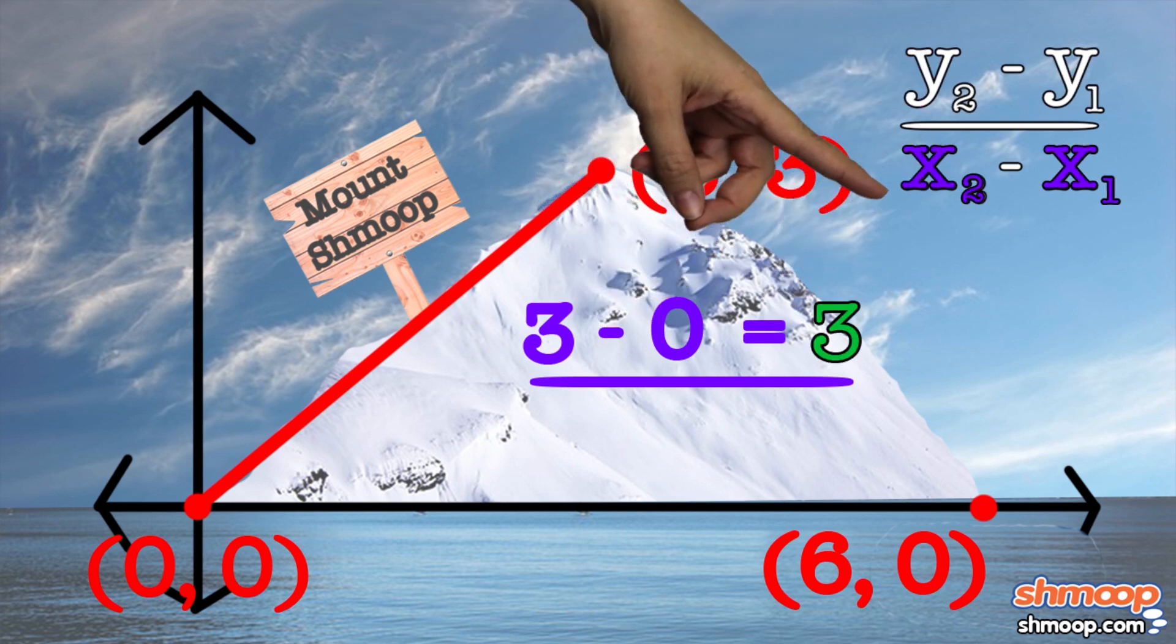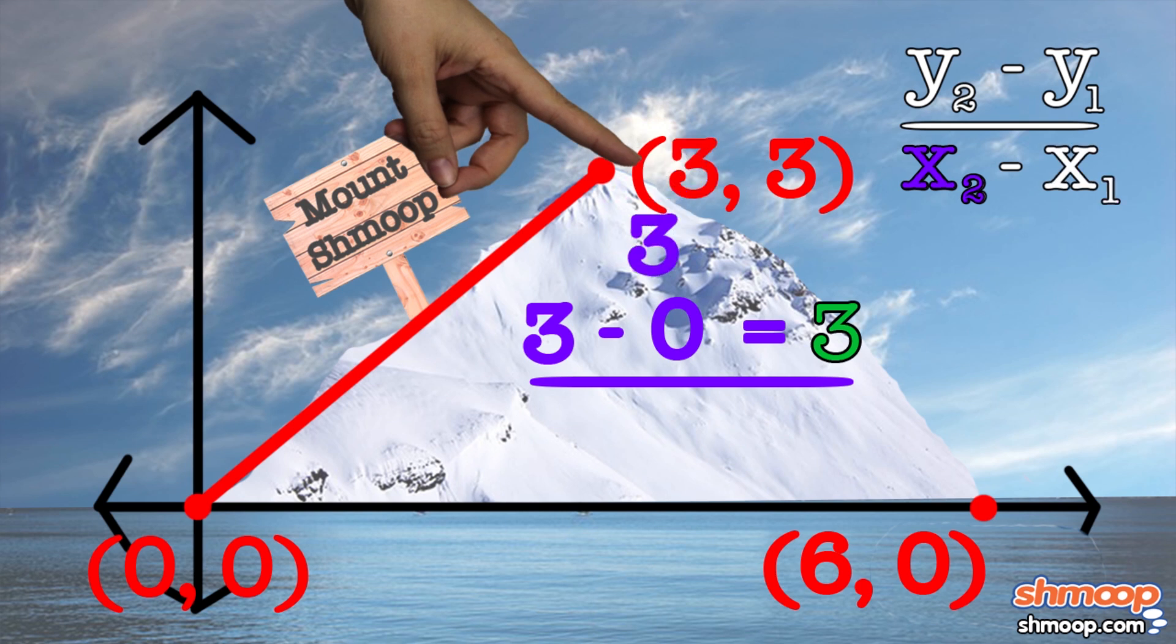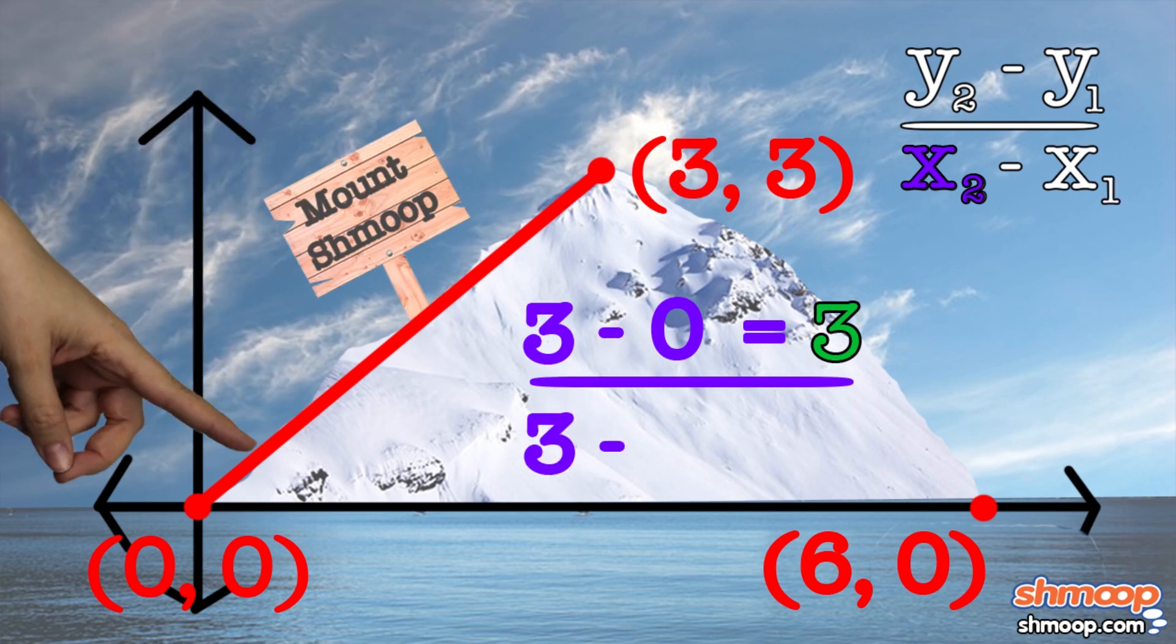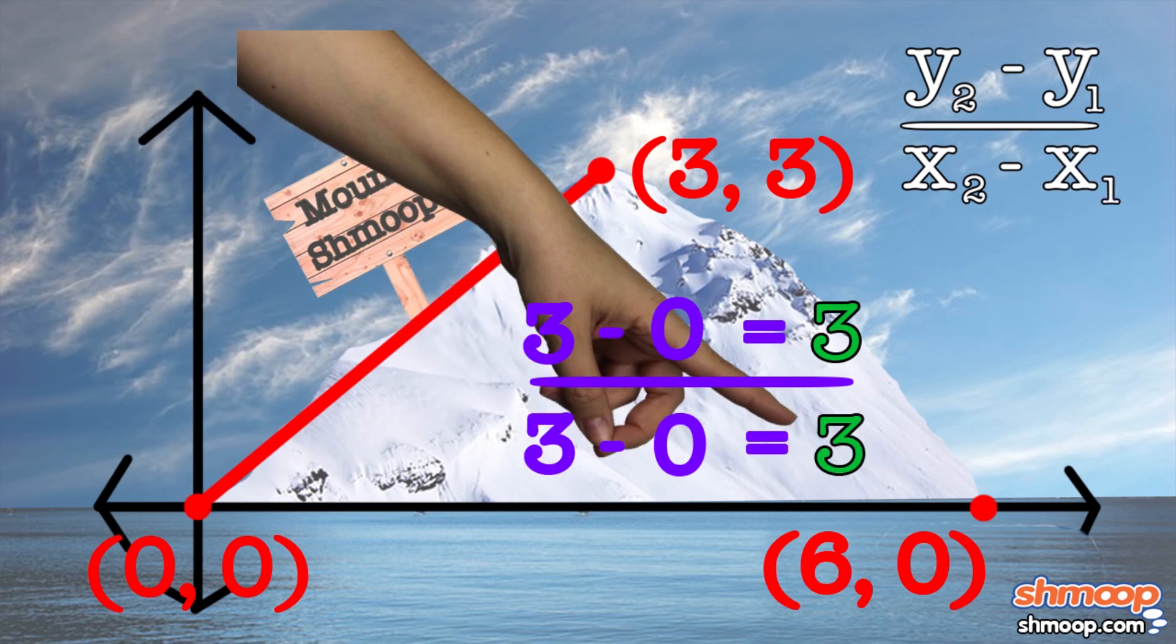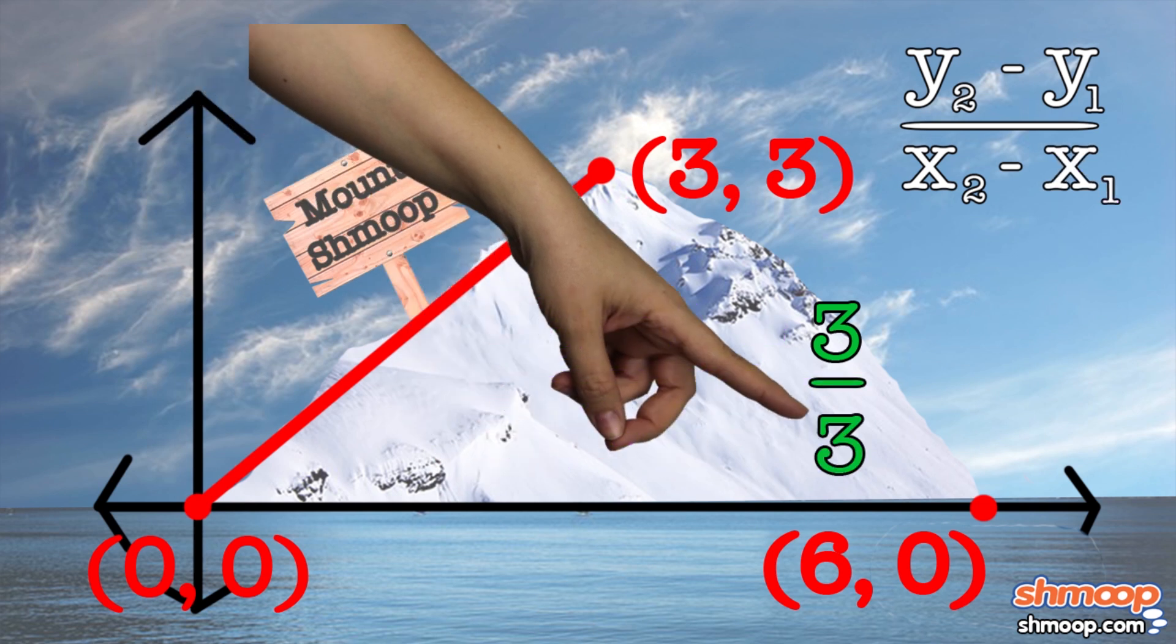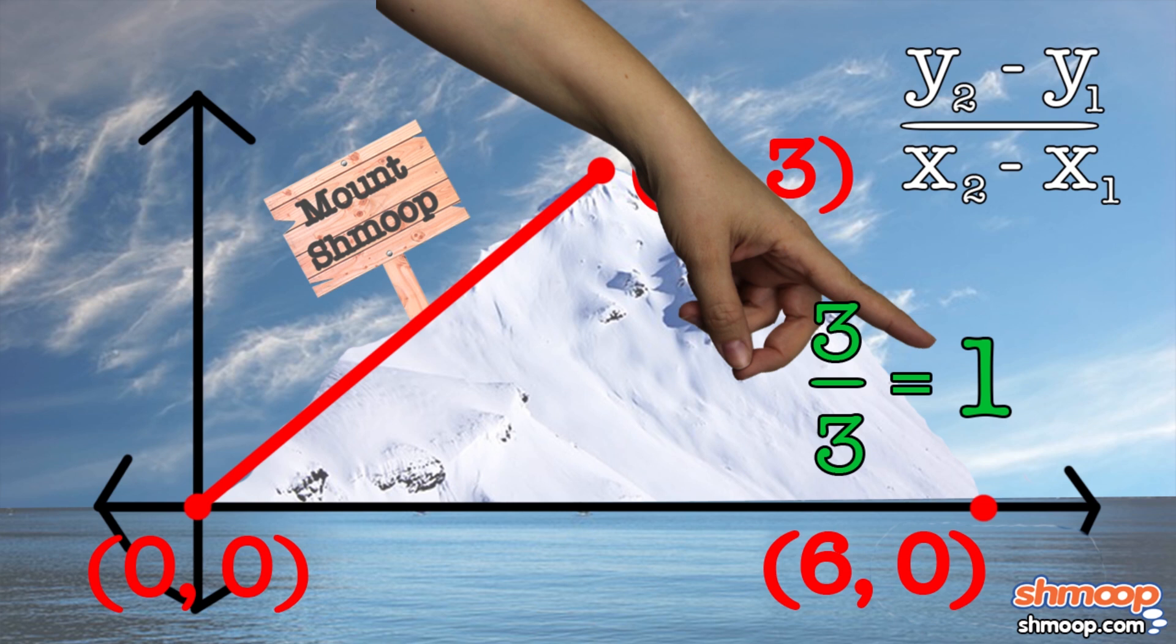Now how to calculate this number? Well, just take the first x here, which is 3, and subtract the second x here, which is 0, and we get 3 again. So our slope fraction is just 3 over 3, yes, the loneliest number. See? 1.